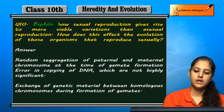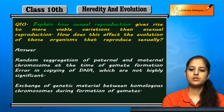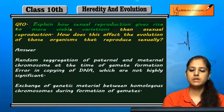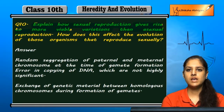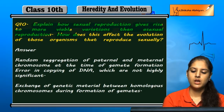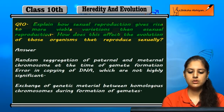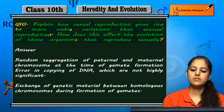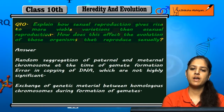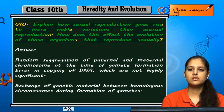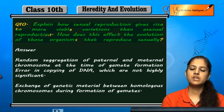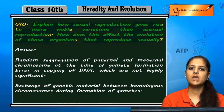Explain how sexual reproduction gives rise to more viable variations than asexual reproduction, and how this affects the evolution of sexually reproducing organisms. Why are there more variations in sexual reproduction and not in asexual reproduction?